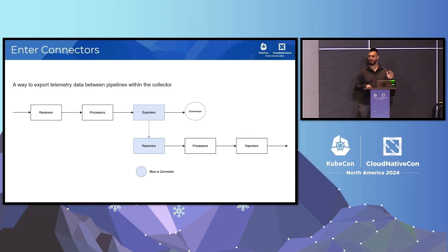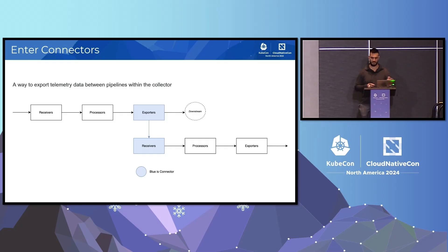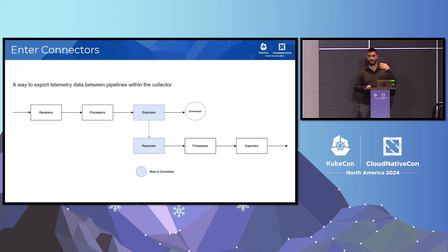Enter connectors. I'm going to give a 30-second overview of connectors, but I'll be barely scratching the surface. I think there was a very good talk on connectors at last year's KubeCon, so if you're interested, definitely give that one a listen. For our purposes, connectors are just a way to connect multiple pipelines in a single collector. Traditionally, data enters the collector through a receiver, goes through the processor pipeline, and exits through an exporter. But instead, you can have data consumed by essentially the start of another pipeline.